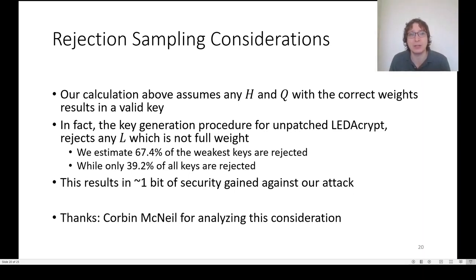There is one factor that makes our attack not quite as good, which is projection sampling. Our calculation above was assuming that any h and q with the correct weights would be a valid key. But this is not really the case because in the LEDAcrypt key generation procedure, any key where the weight of l is not the maximum value it can be is rejected. This results in the rejection of about 39.2% of keys, but 67.4% of the weakest keys. However, this only results in about one bit of security difference from the simple way of calculating how effective our attack is.